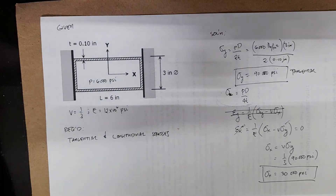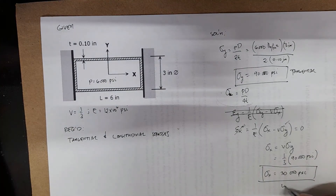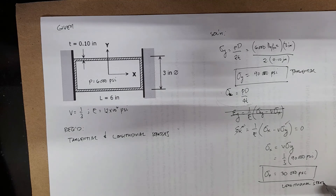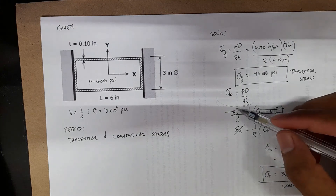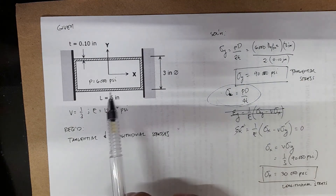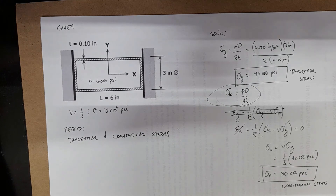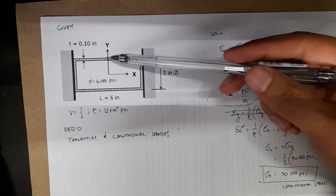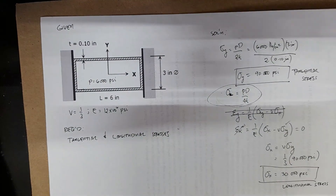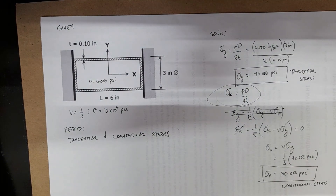So that's your tangential stress and your longitudinal stress. We cannot use Pd over 4t because the strain along the x direction is specified as 0. But we can make use of Pd over 2t for the y direction since our y direction has no restrictions.